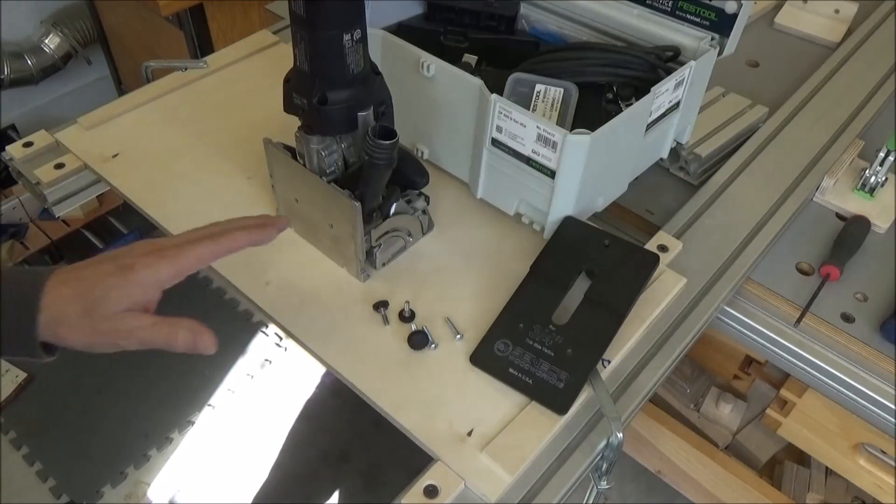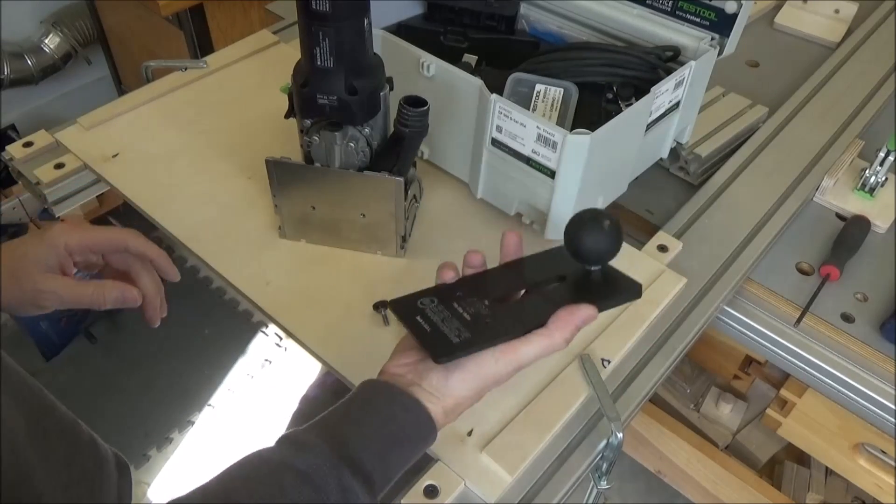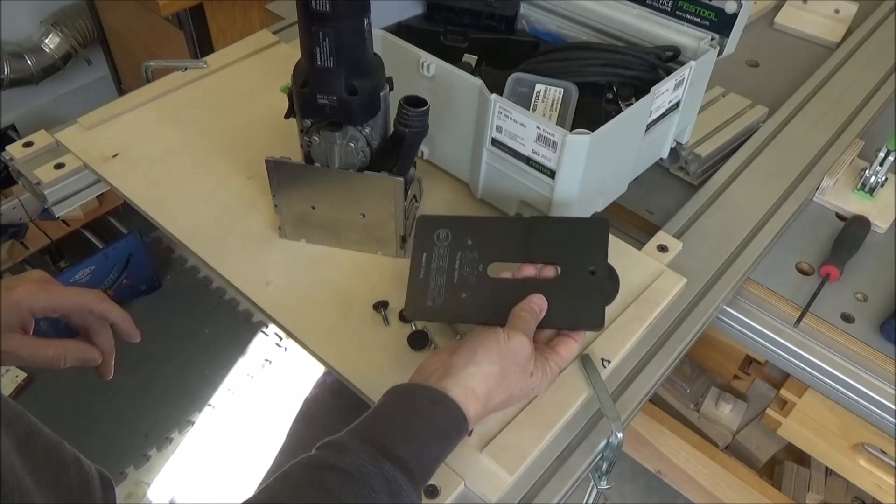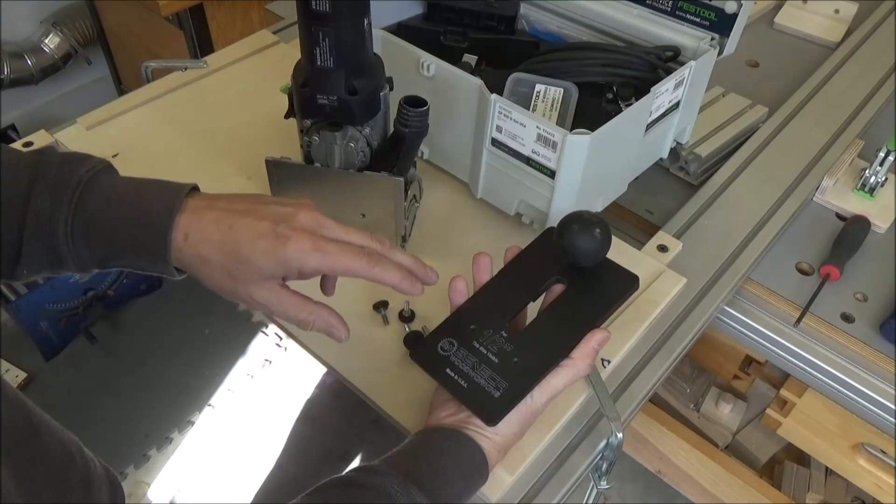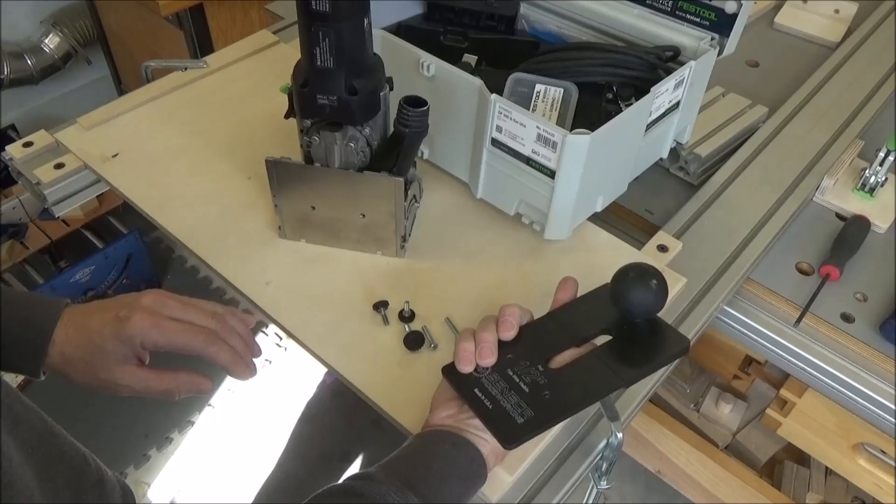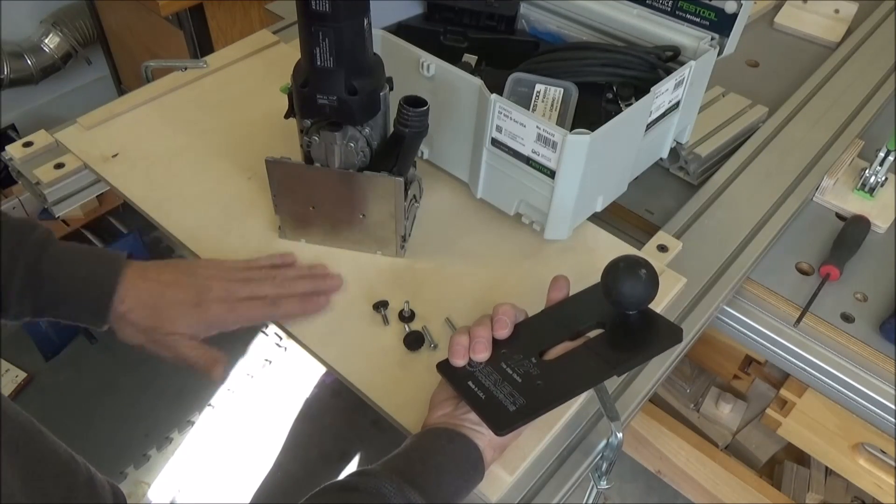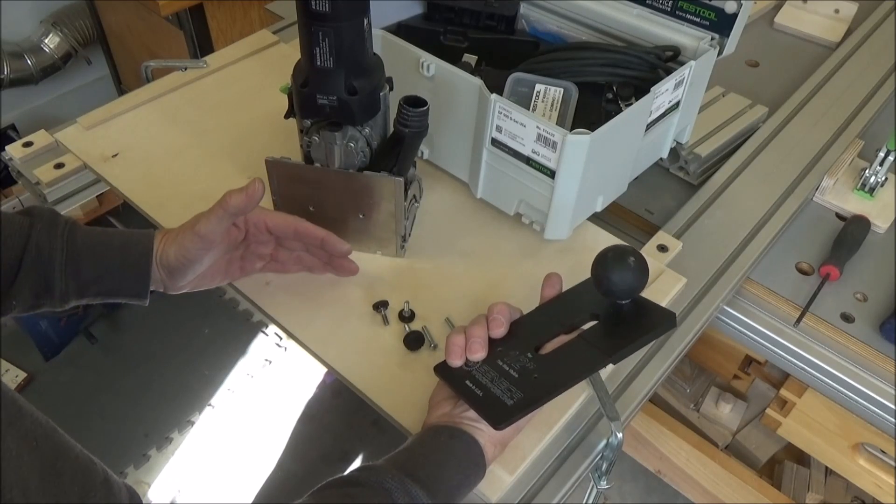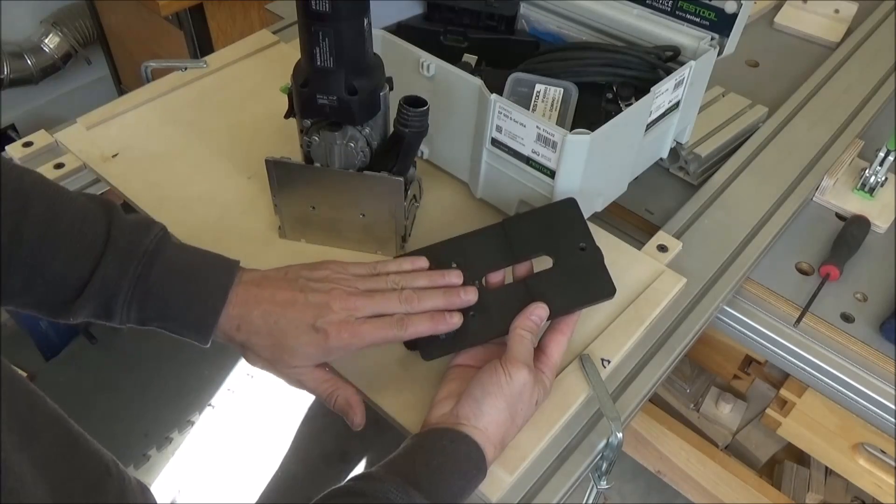I've got an upcoming project where I need to use my Domino, and I want to use my plate here, my Dama plate. But it's only for three-quarter and half inch, and I want a quarter inch offset from three-quarter inch pieces.